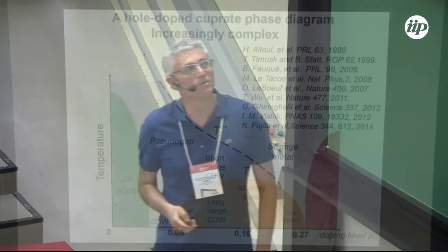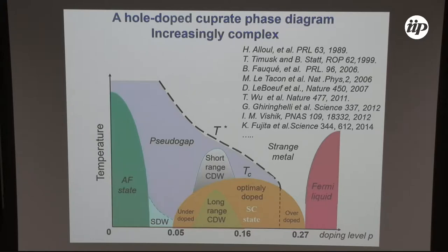The cuprate phase diagram becomes increasingly complex with a long-range charge density wave order inside the superconducting dome, a short-range charge density wave order just above the critical temperature TC, and above we have the pseudogap phase which opens below the T* temperature. The first part of this talk will focus on the pseudogap phase.